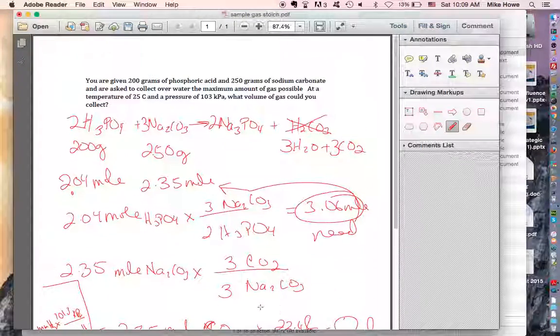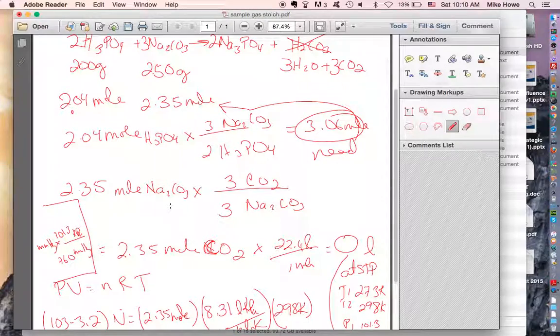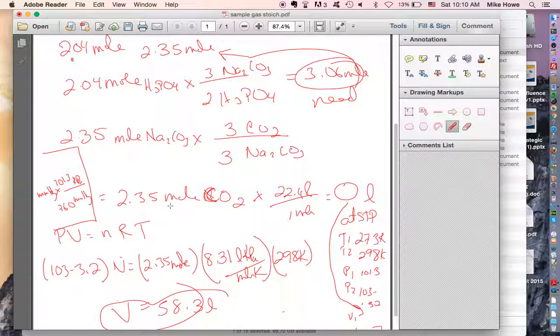All right, so quick review: write the chemical equation, determine which reactant is limiting. After you know the reactant that runs out first, you find the moles of gas. After you find the moles of gas, you can use PV equals NRT to find its volume.